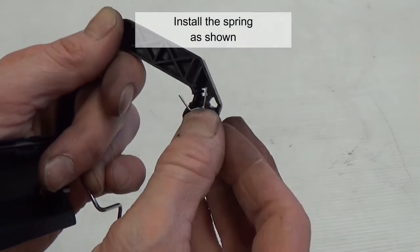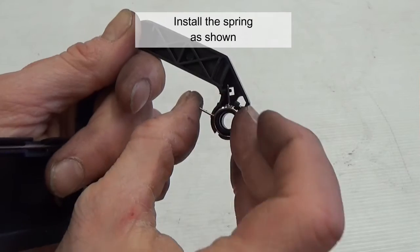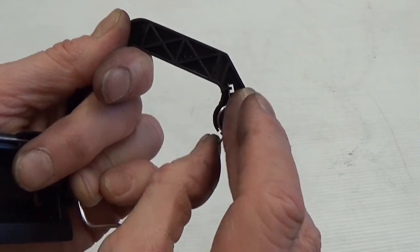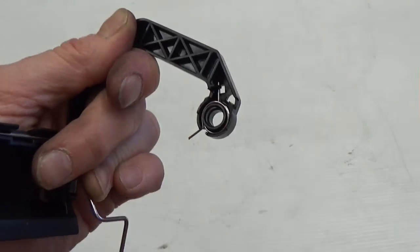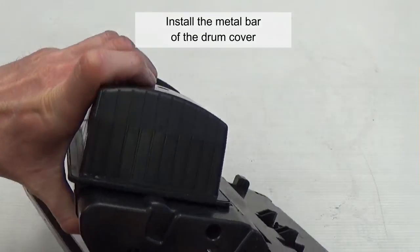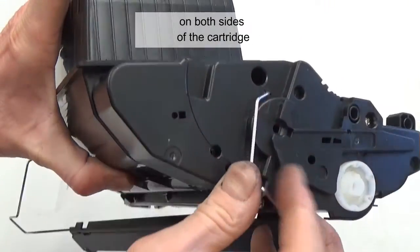Install the spring as shown. Install the metal bar and the drum cover on both sides of the cartridge.